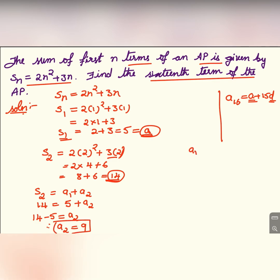From this we can find out the difference: a₂ - a₁ = 9 - 5 = 4. So we have d = 4, and a₁ = 5. We have these two, we can find out a₁₆. a₁₆ = a + 15d.